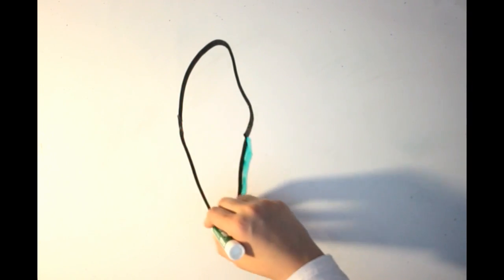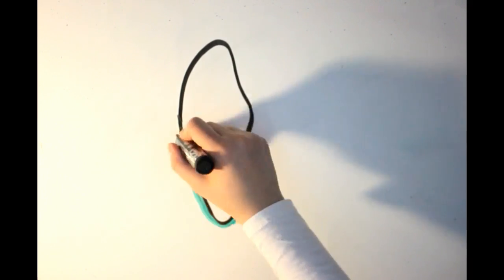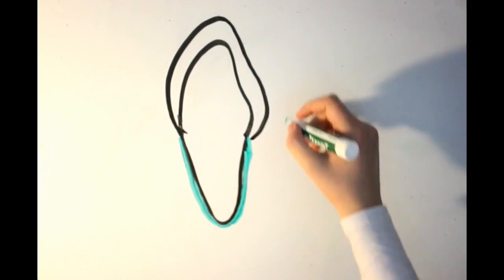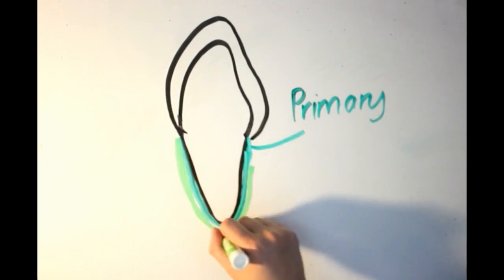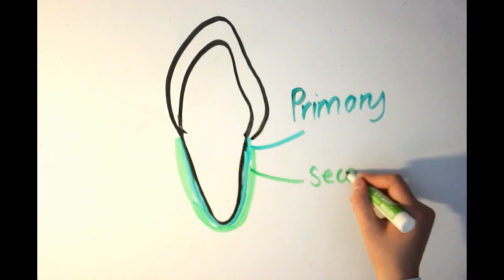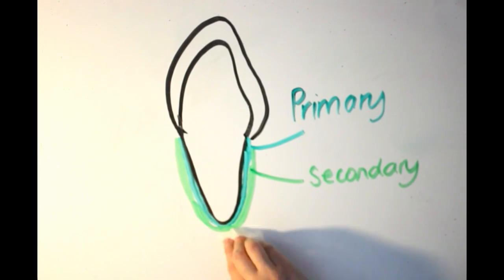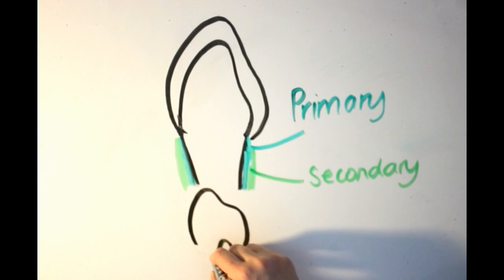Now let's take a look at primary and secondary cementum. Primary cementum is formed during root formation until the teeth come into function, while secondary cementum is formed during the functioning of the teeth until their exfoliation.